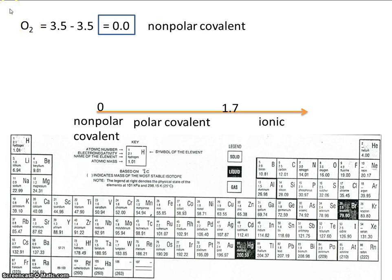Let's look at another example. Hydrogen bromide. Hydrogen's value is 2.1. Bromine's value is 2.8. So let's subtract those two values and get the difference. 2.8 minus 2.1. That equals 0.7. So the bond between hydrogen and bromine is polar covalent, because it falls between 0 and 1.7.